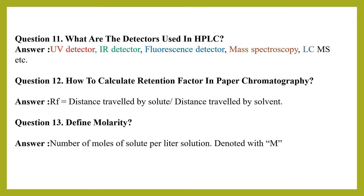What are the detectors used in HPLC? The commonly used detectors in HPLC are UV detector, IR detector, fluorescence detector, mass spectroscopy, and liquid chromatography mass spectroscopy (LC-MS) detectors.